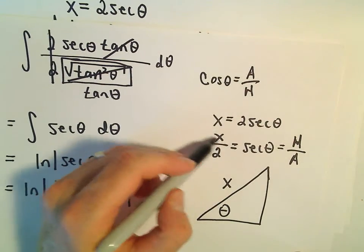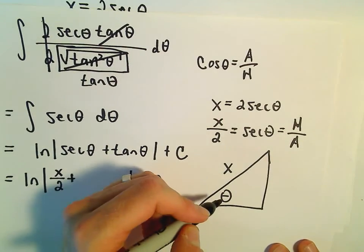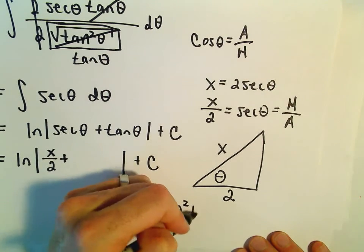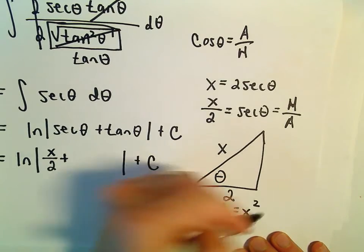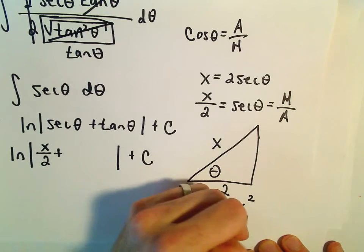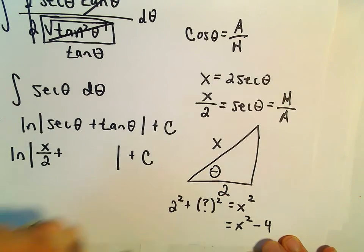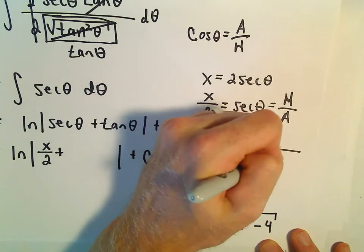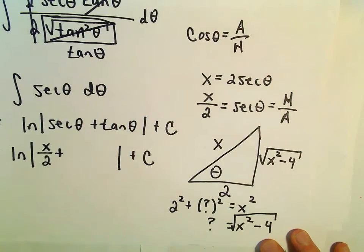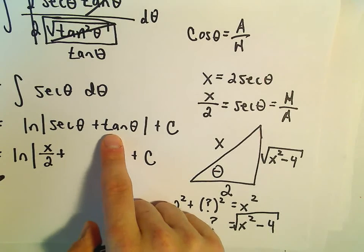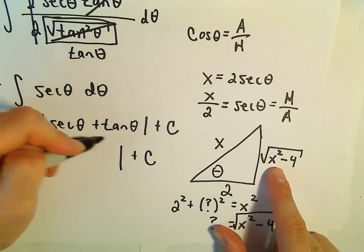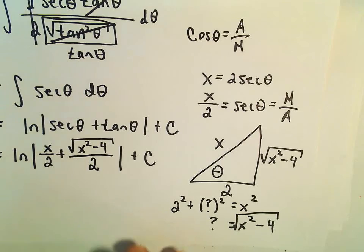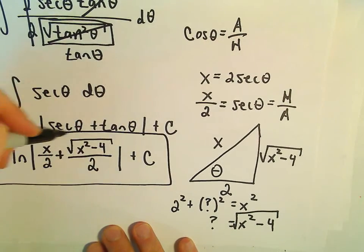Using the Pythagorean theorem: 2 squared plus the missing side squared equals x squared. Subtracting 4 and taking the square root gives the missing side as the square root of x squared minus 4. Now we can read off tangent of theta, which is the opposite over the adjacent: the square root of x squared minus 4 over 2. So our final antiderivative is the natural log of x over 2 plus the square root of x squared minus 4 over 2, plus C.